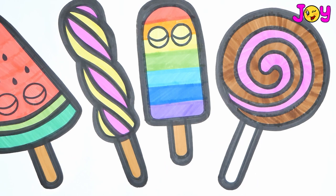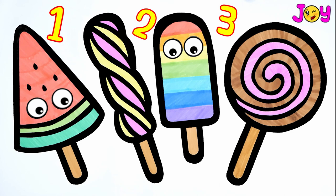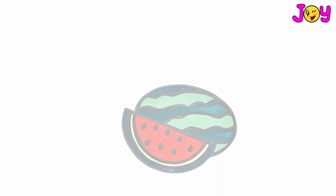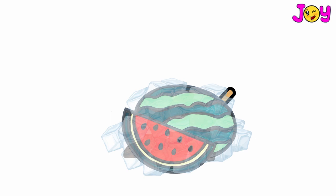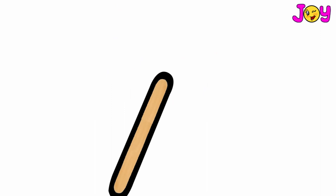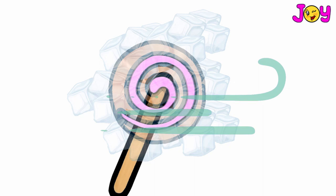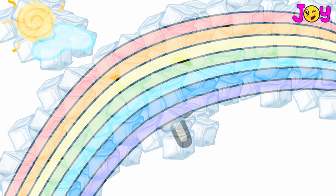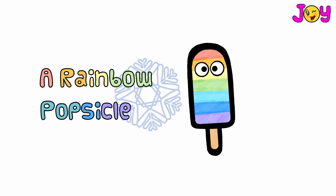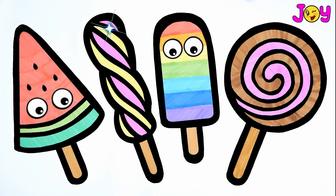It looks so yummy. Brown. Wow, there are four different types of popsicles. Let's make a twisty popsicle. Wow, it's a twisty popsicle! Let's make a watermelon popsicle. Wow, it's a watermelon popsicle! Let's make a lollipop popsicle. Wow, it's a lollipop popsicle! Wow, it's a rainbow popsicle!